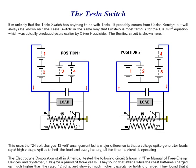It is unlikely that the Tesla switch has anything to do with Tesla. It probably comes from Carlos Benetez, but will always be known as the Tesla switch — in the same way that Einstein is most famous for the E equals MC squared equation, which was actually produced years earlier by Oliver Heaviside. The Benetez circuit is shown here.